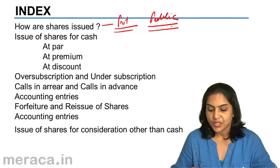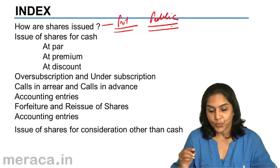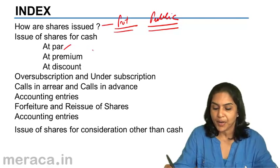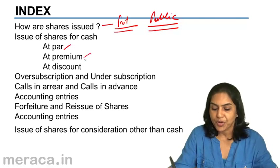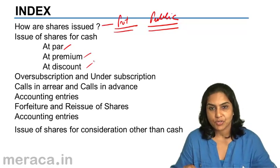Next, we will discuss what are the ways in which shares can be issued. They may be issued at par, at premium, or at discount.